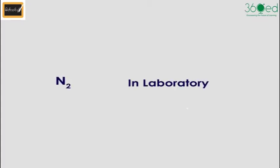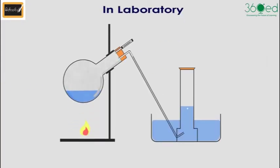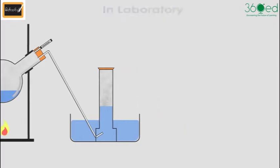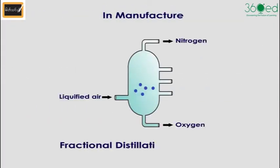In laboratories, nitrogen gas can be prepared by heating a solution of ammonium nitrite. Nitrogen is obtained in factories by the fractional distillation of liquid air.